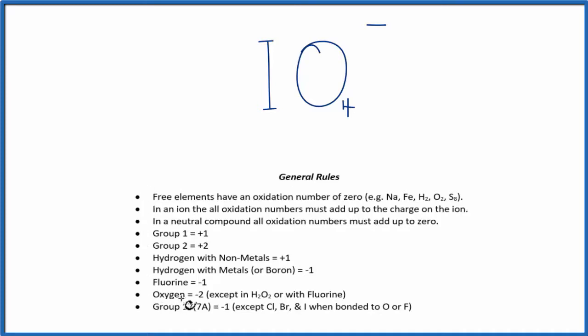Looking down the rules, we can see that oxygen is almost always a minus 2, except in a few instances. So we have four of them, each of them is going to be a minus 2.